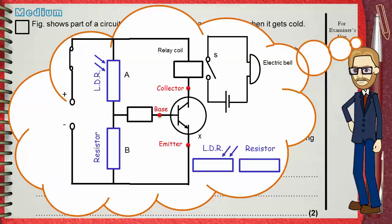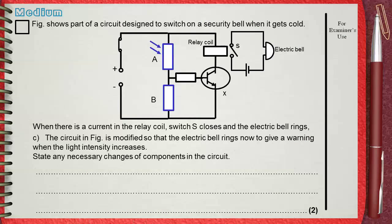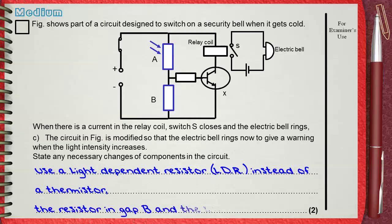So what are the changes that we will make? We say that we will use a light-dependent resistor instead of the thermistor. Also, the resistor will be in Gap B and the LDR will be in Gap A. Remember that the resistor was in Gap A in the previous question.